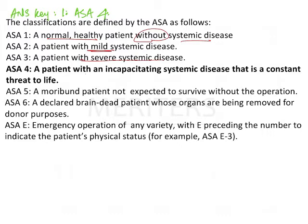ASA 4 is a patient with an incapacitating systemic disease that is a constant threat to life. An example would be a patient who has undergone myocardial infarction, or a patient who is suffering from COVID — COVID can also fall under ASA 4.